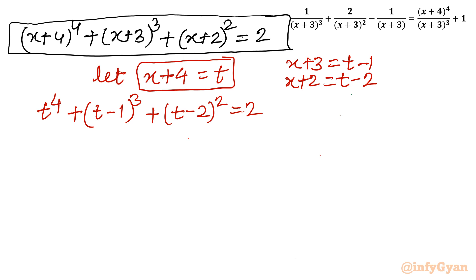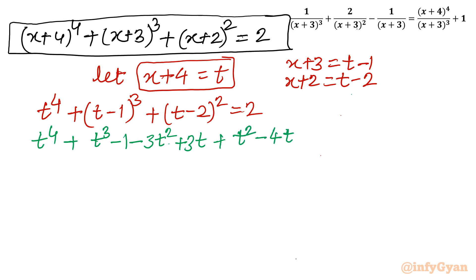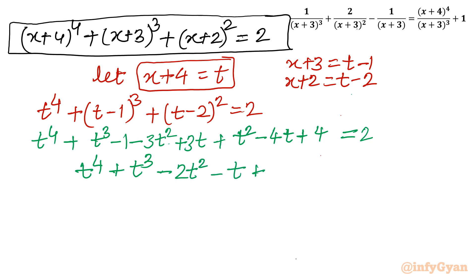Now let us expand using the (a−b)³ and (a−b)² formulas. Expanding and collecting terms gives t⁴ plus t³ minus 4t² minus t plus 1 equal to 0. This is a reciprocal equation where the coefficients are symmetric.